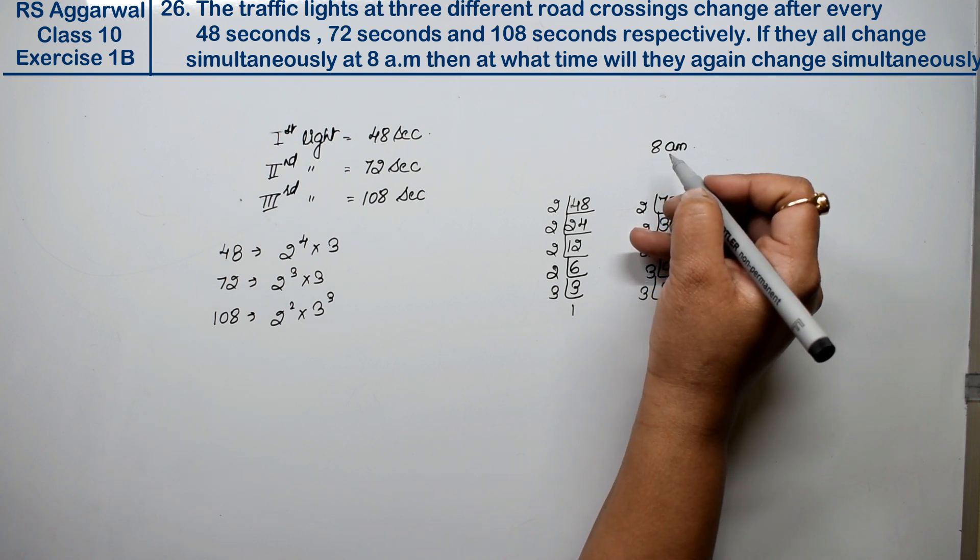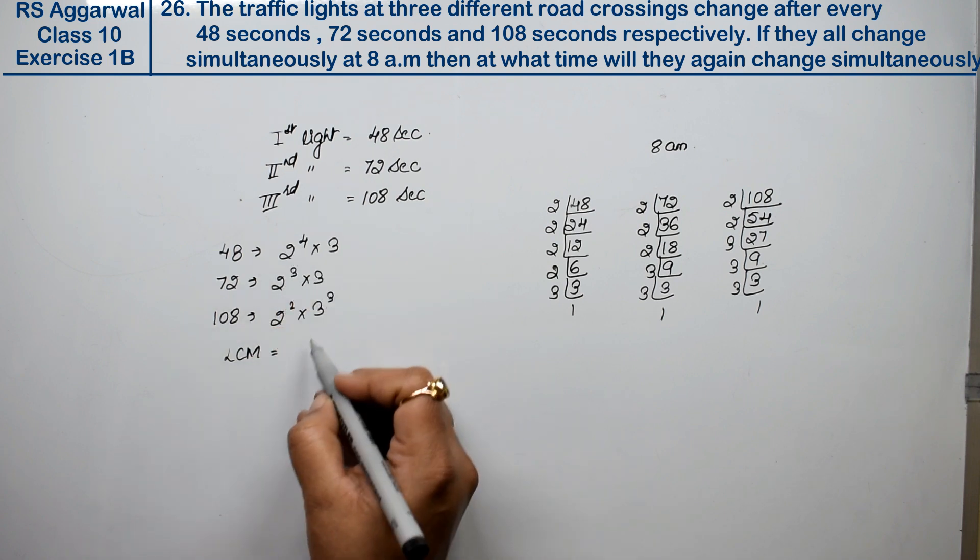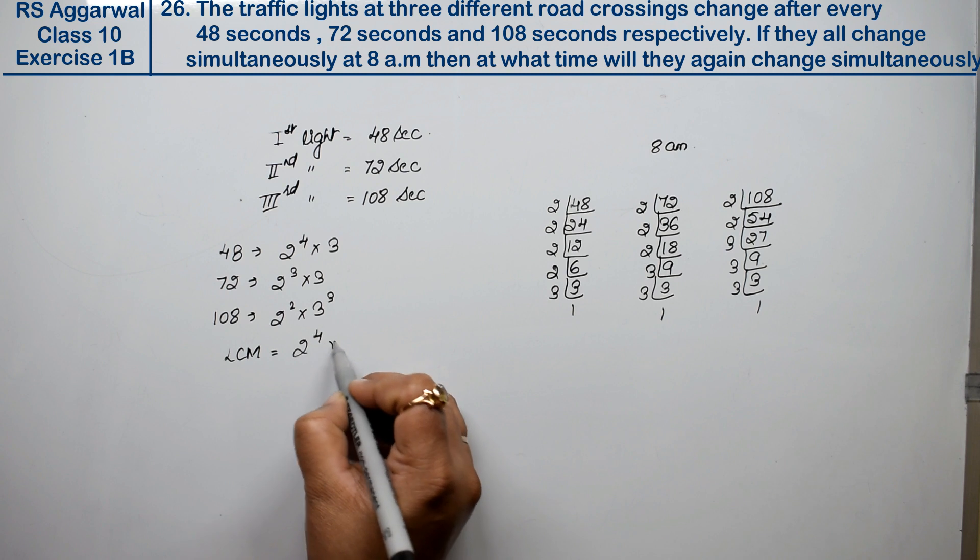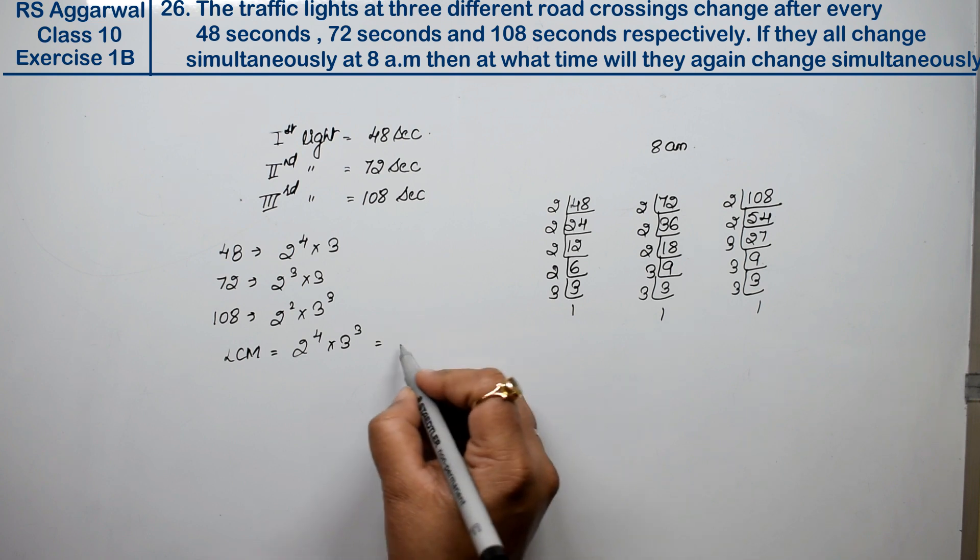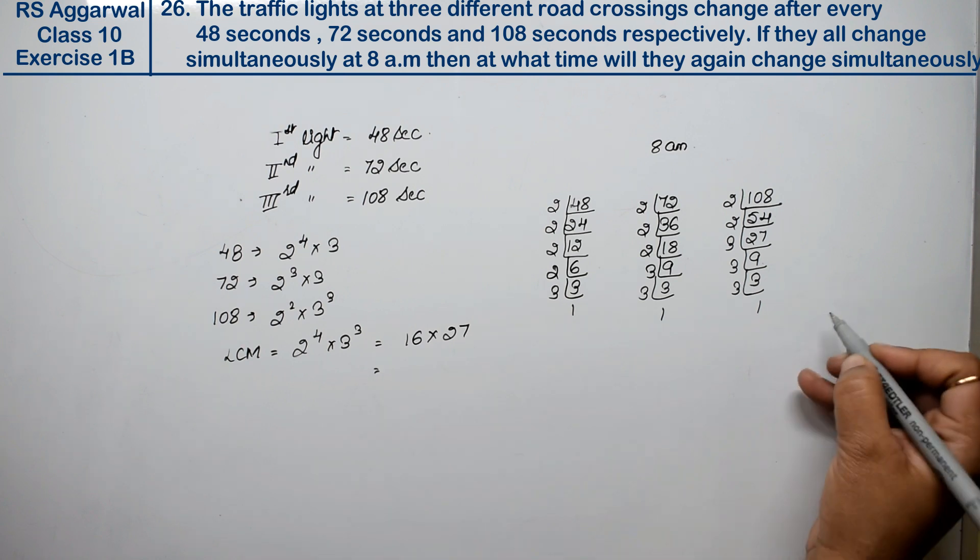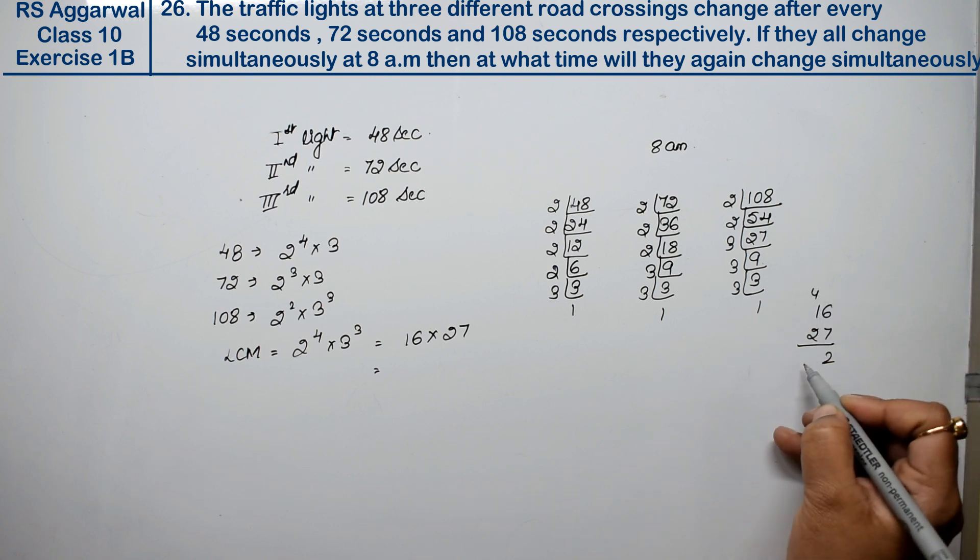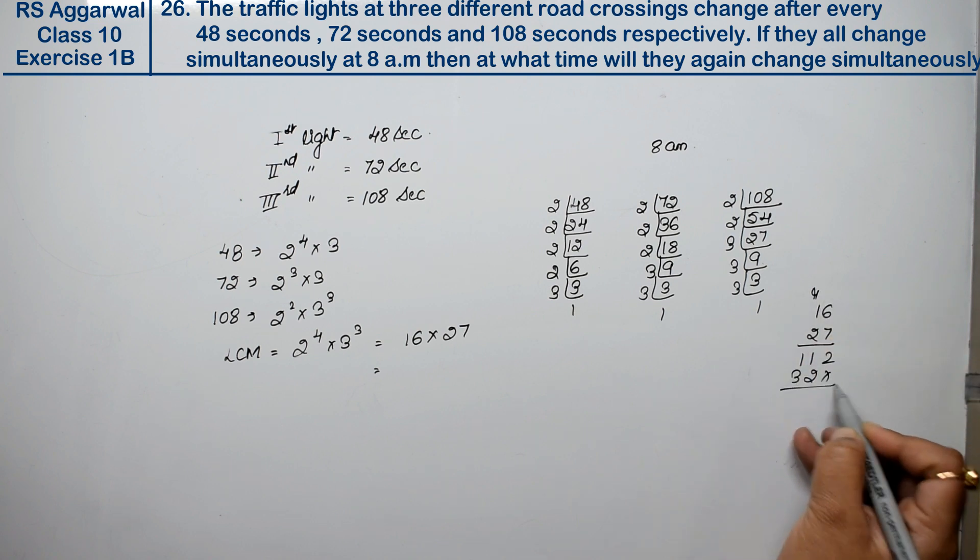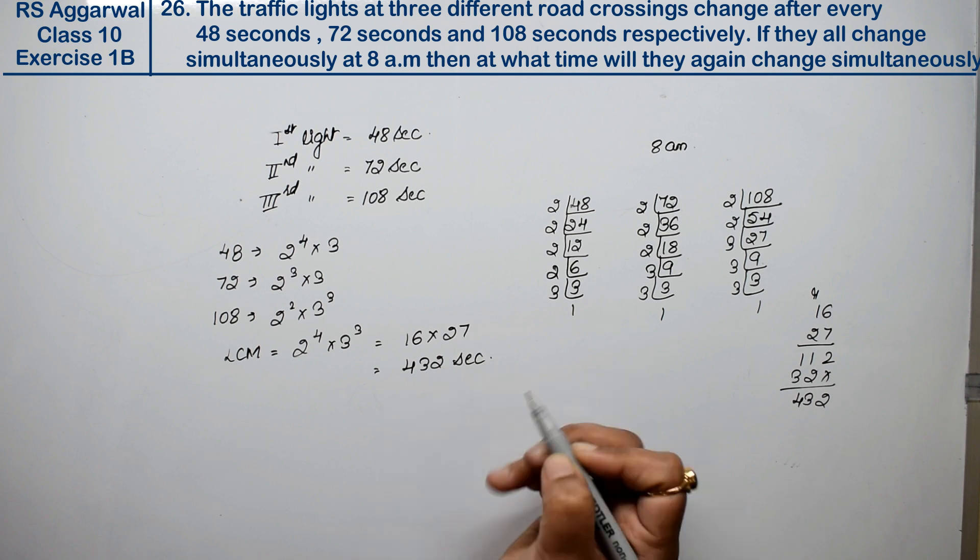The LCM will be 2 to the power 4 into 3 to the power 3. 2 to the power 4 means 2, 4, 8, 16, and 3 cubed means 27. So multiply 16 into 27: 7×6=42, 7×1=7, plus 4 is 11, 2×6=12, 2×1=2, plus 1 is 3. That gives us 432 seconds.